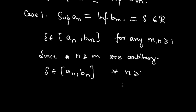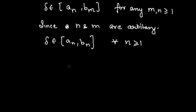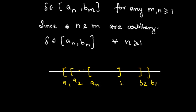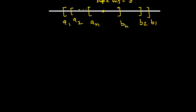On the number line, with nested sequences, you have A1, A2, ..., AN on the left and BN, ..., B2, B1 on the right. If supremum equals infimum, it is a single point, and we take that point as delta.